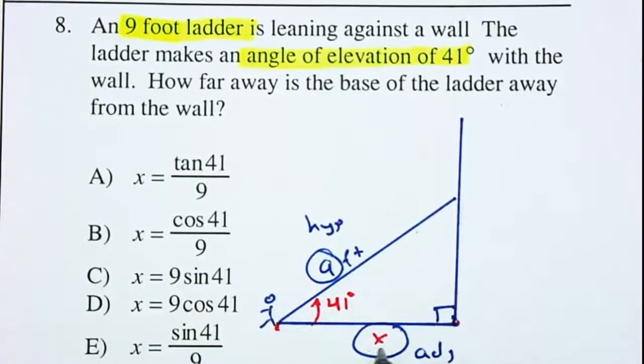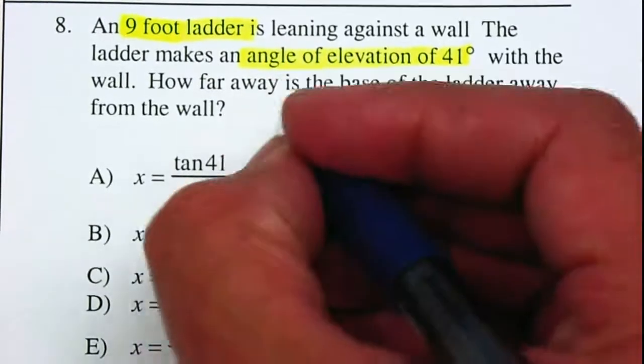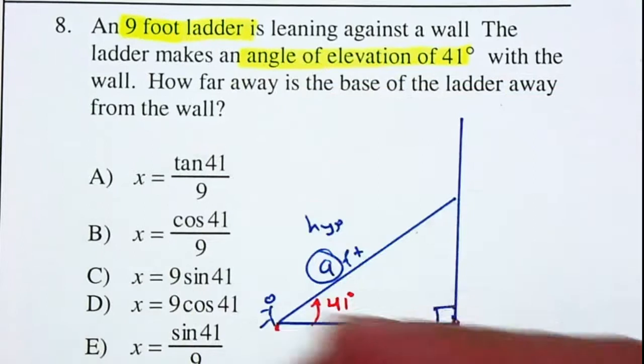So I need to decide minus sine, cosine, or tangent. So therefore we're going to be using the cosine because the cosine is adjacent over hypotenuse.